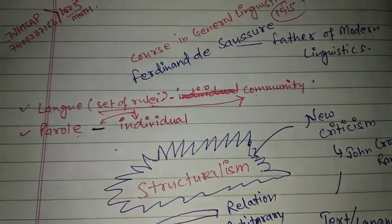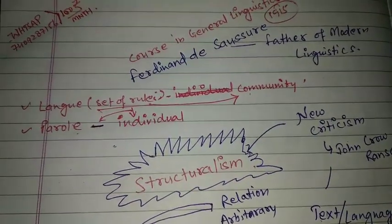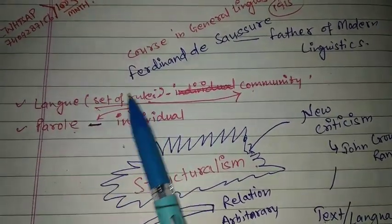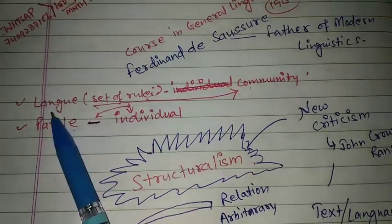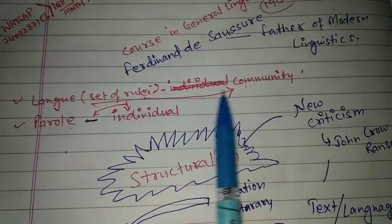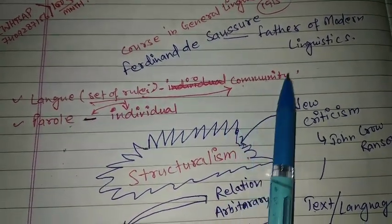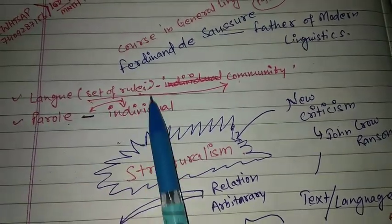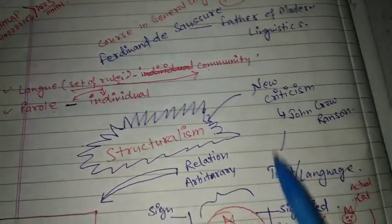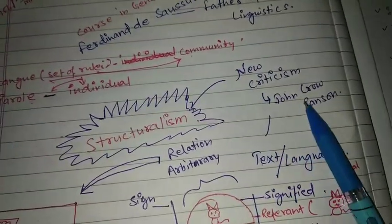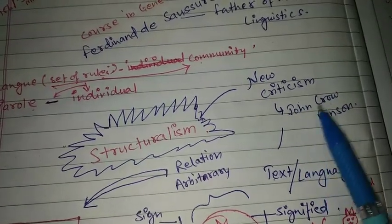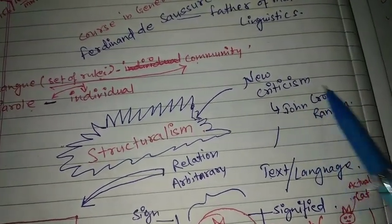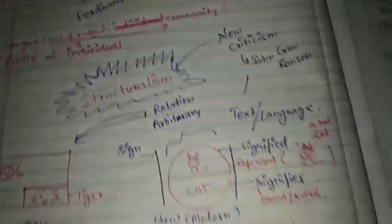Now let's talk about lang and parole. Both are sets of rules. Lang is the set of rules which a community uses, and parole is the set of rules an individual person uses. New criticism was first used as a term by John Crowe Ransom.